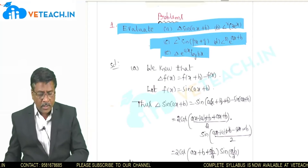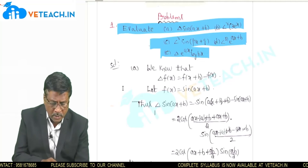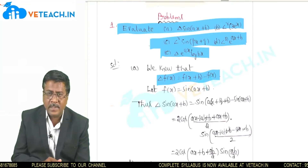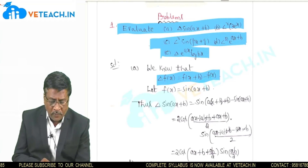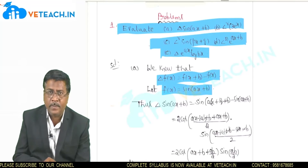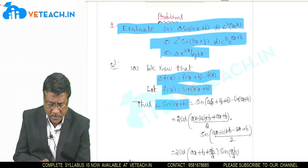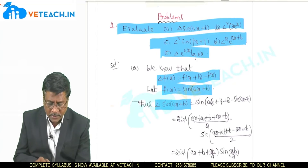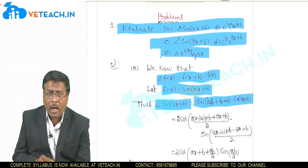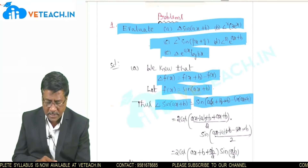The forward difference formula is: delta of f(x) = f(x+h) − f(x). The function is f(x) = sin(ax+b). So, delta of sin(ax+b) equals the forward difference, that is sin(a(x+h)+b) minus sin(ax+b).